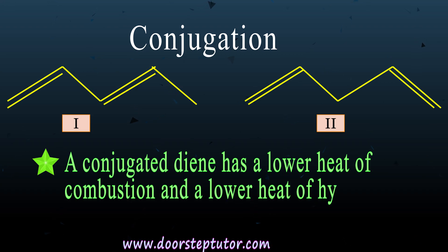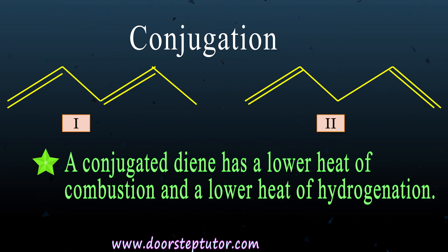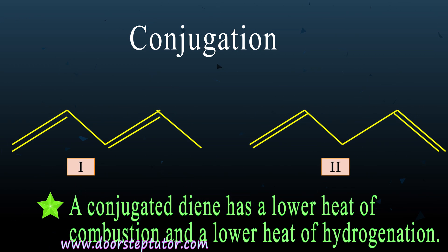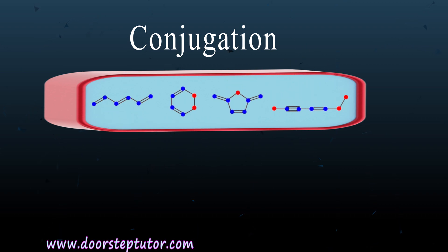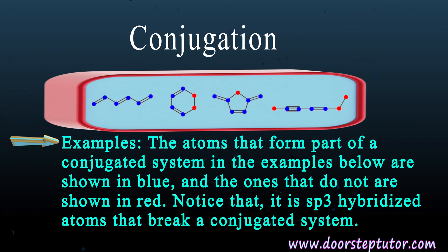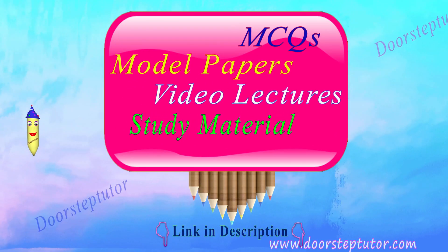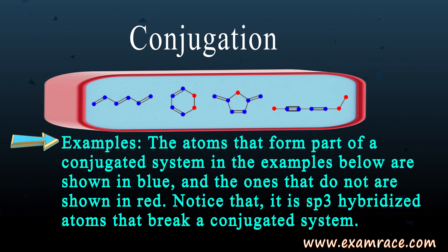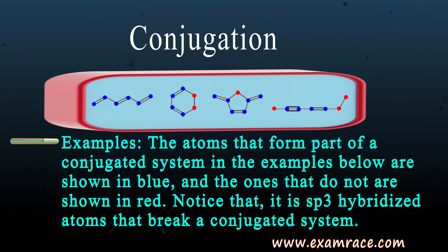A conjugated diene has a lower heat of combustion and a lower heat of hydrogenation. Isolated double bonds, as seen in the second diene structure, can migrate quite readily to become conjugated. In the figure shown, atoms forming part of a conjugated system are shown in blue, while sp3 hybridized carbon atoms — shown in red — break the conjugated system and do not show conjugation.